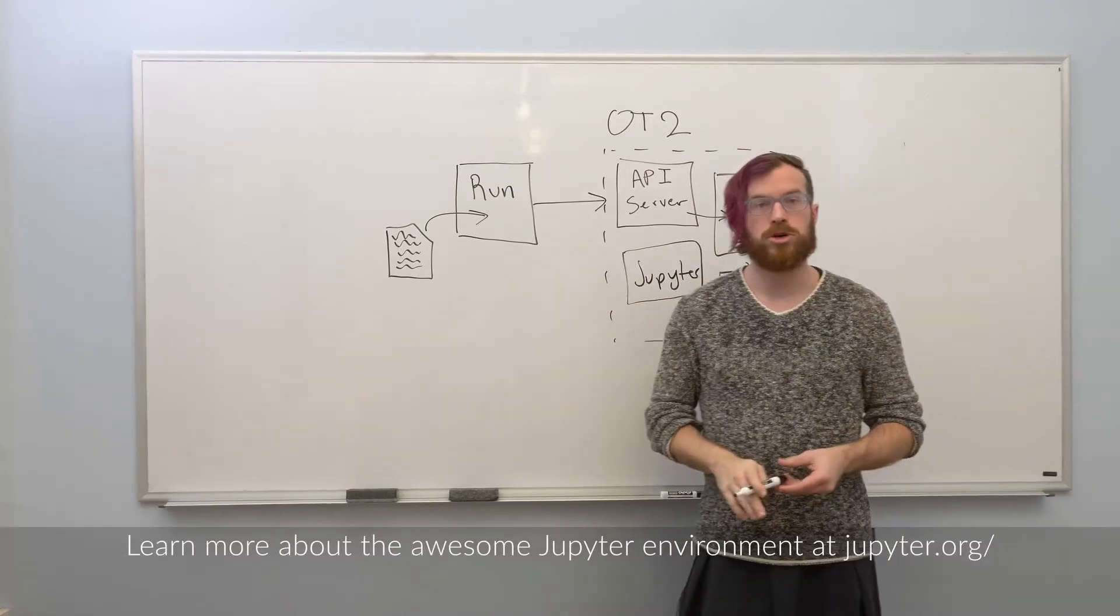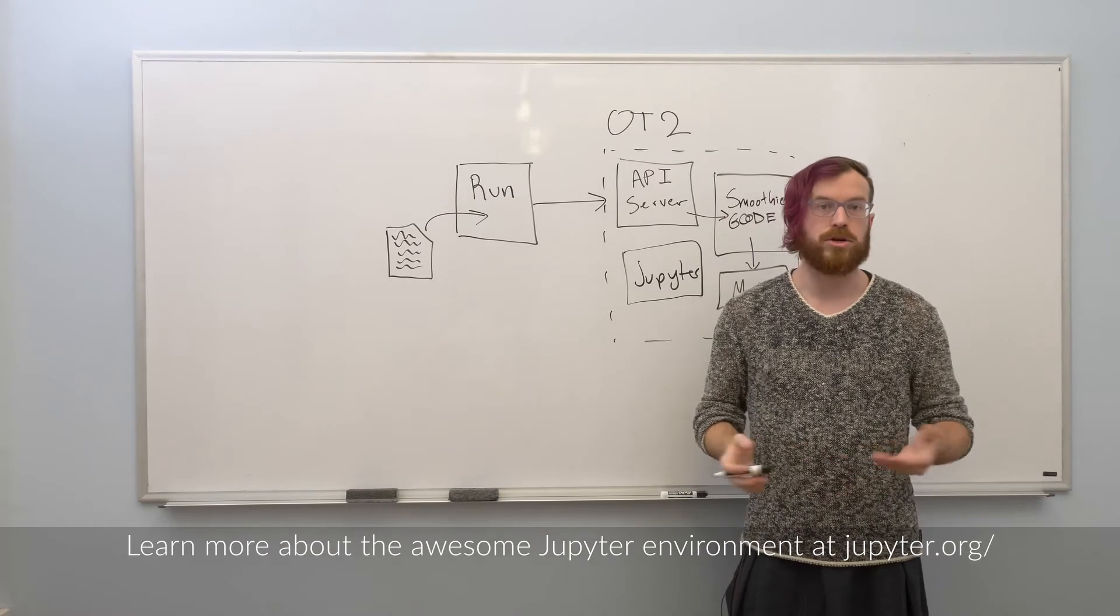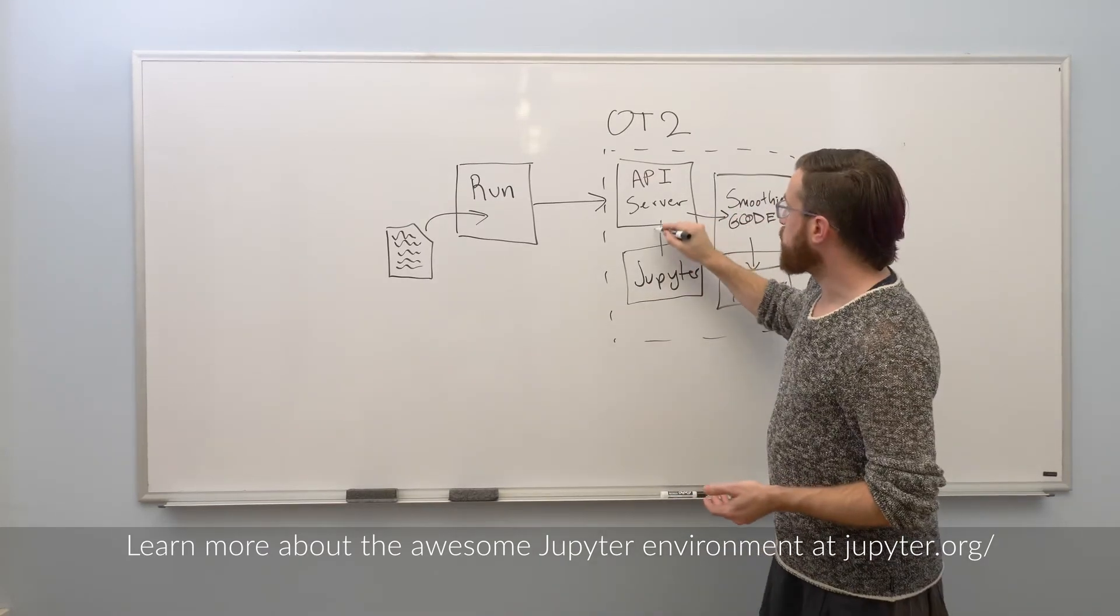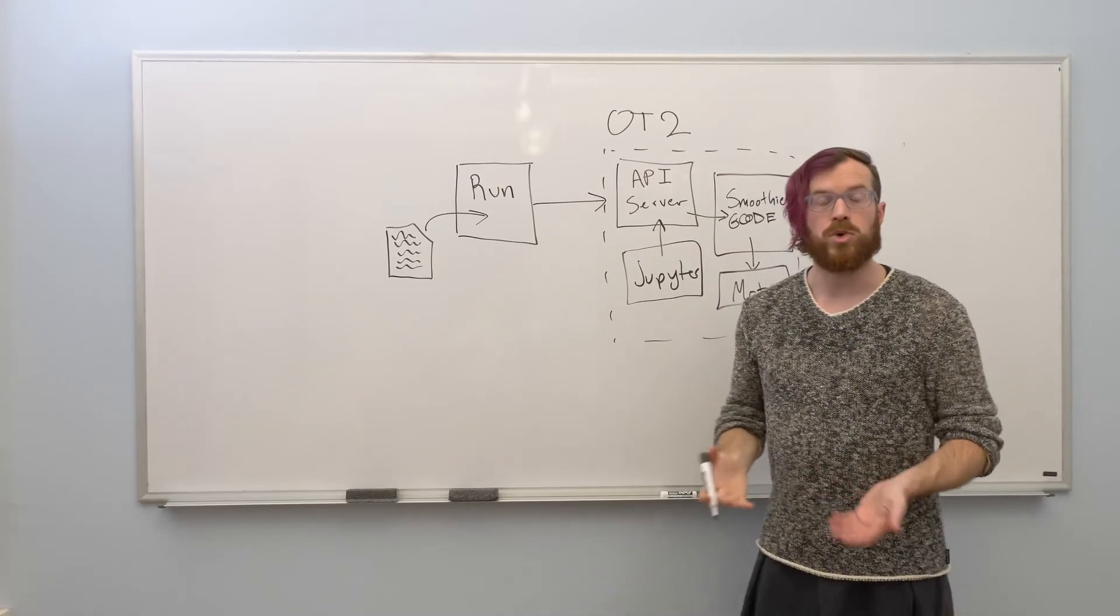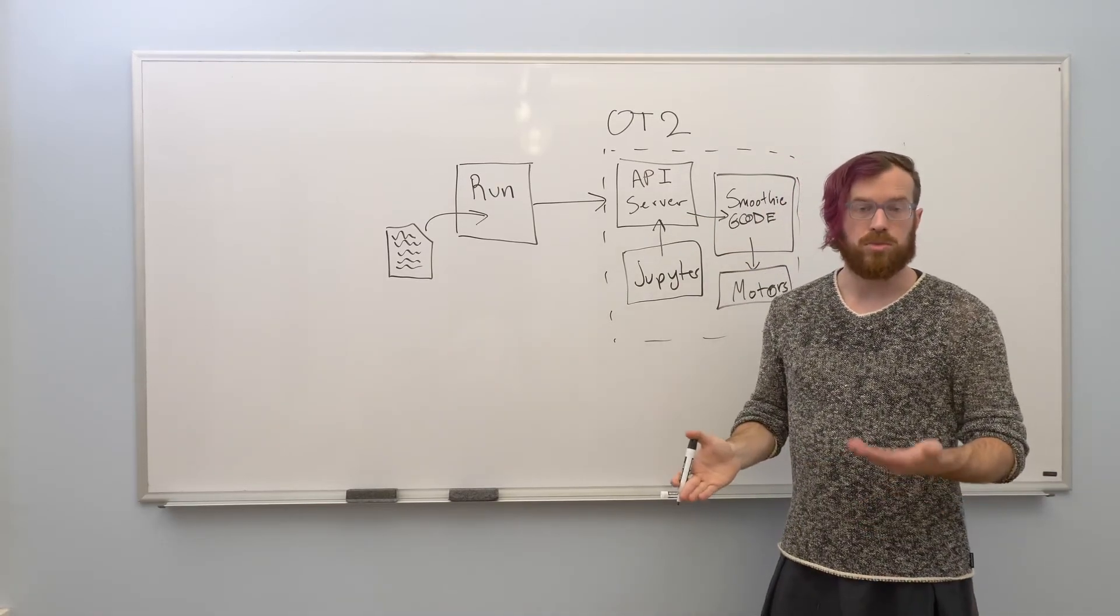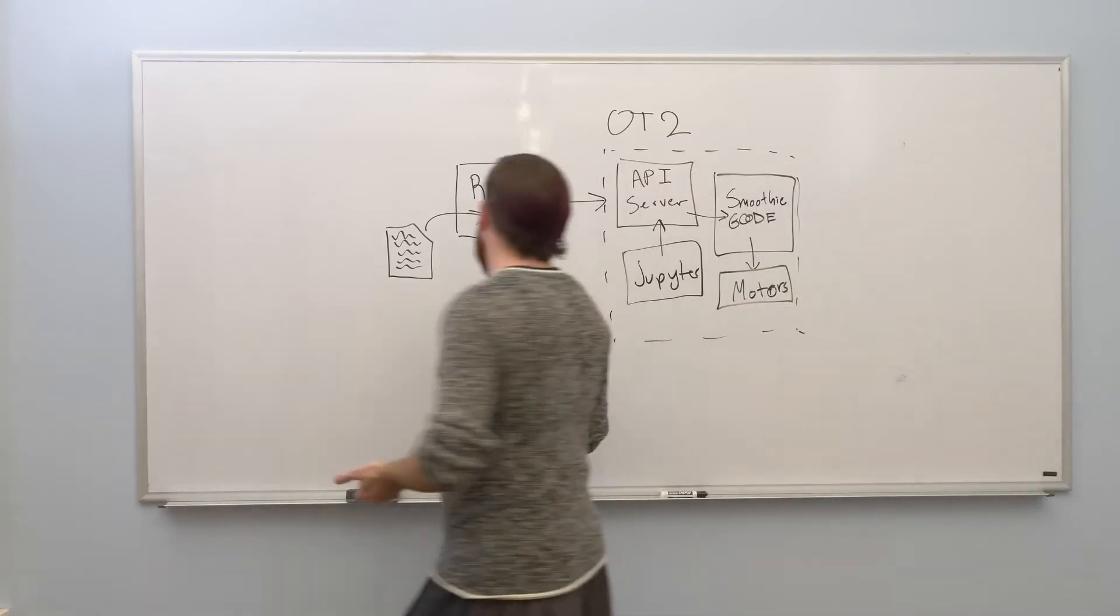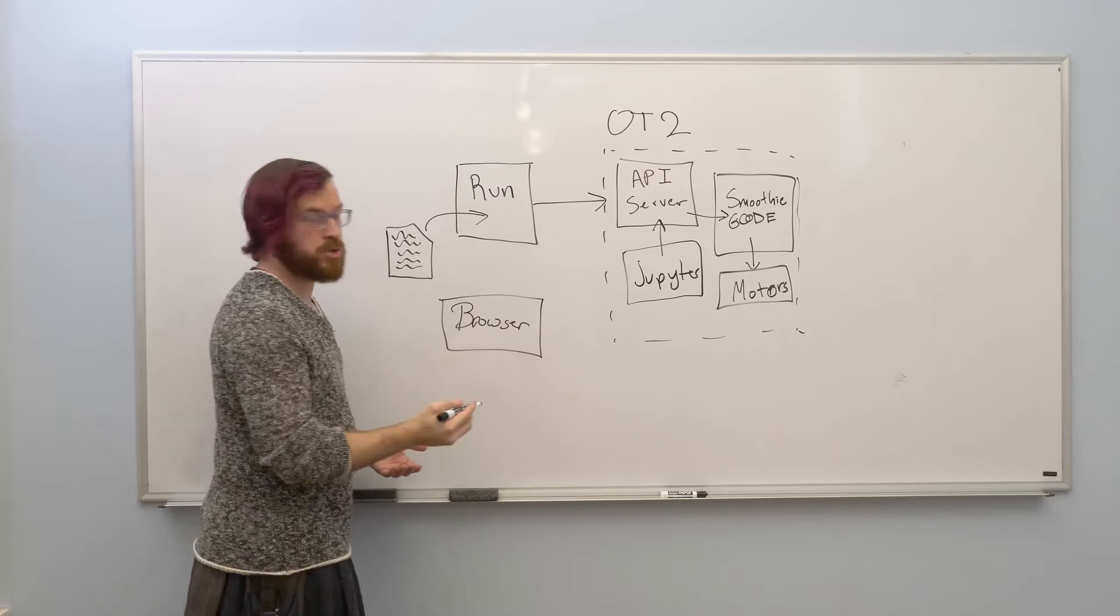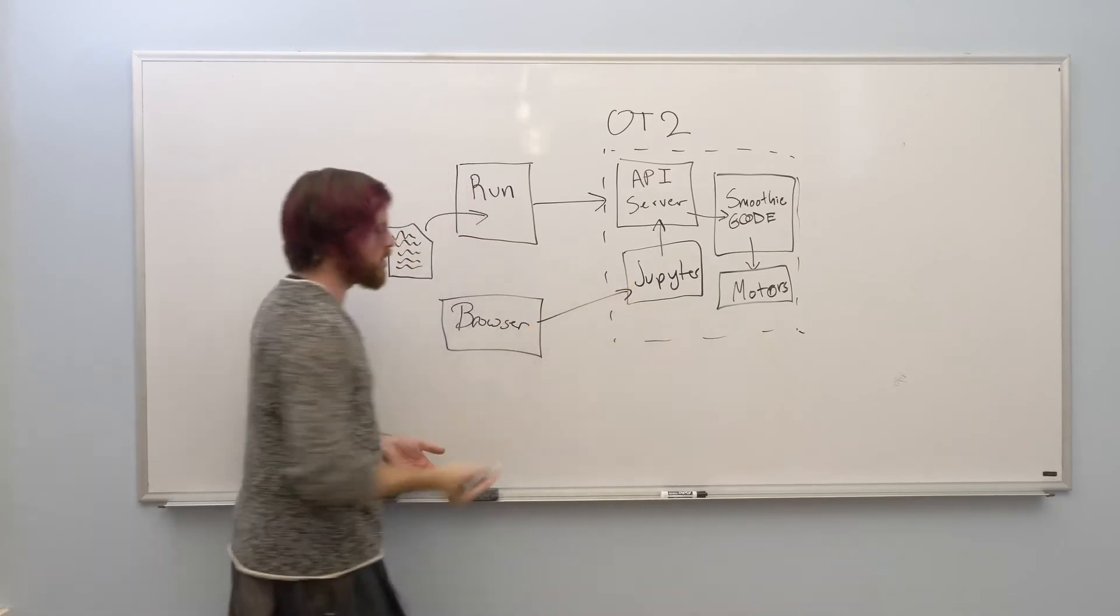Normally, you run a Jupyter Notebook server on your laptop and interact with it through the browser. In our case, in order to enable Jupyter server to control the robot, we run a Jupyter server on the robot on board and then you can connect through your browser by going to a link that's provided in the OT2 documentation.